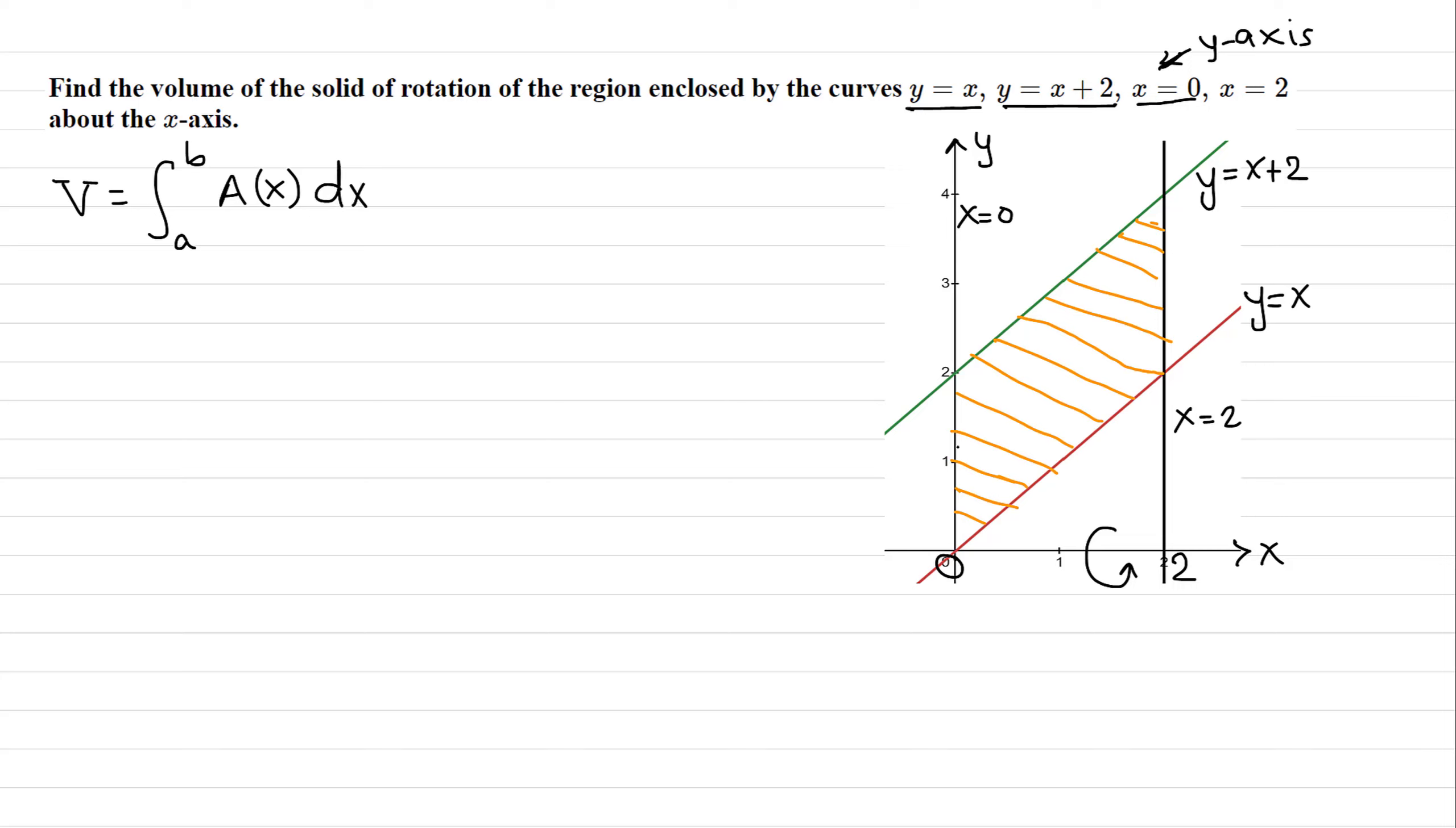We take a sample slice in this region, a vertical slice with very small thickness. The generic point here is (x, y), so x is x, and y is given by x on this line. This one is also (x, y), but y is given by x plus 2.